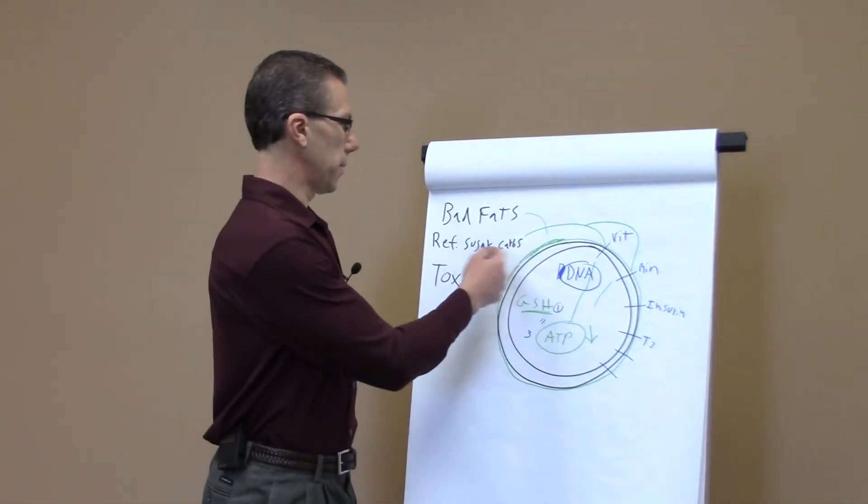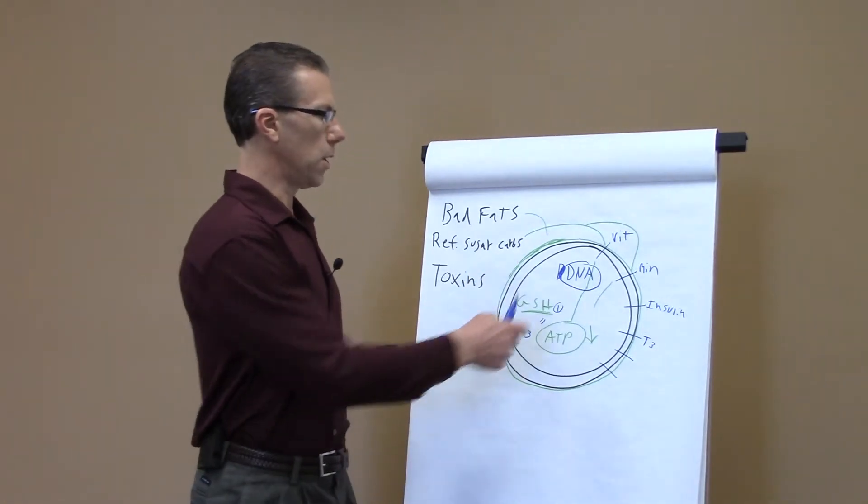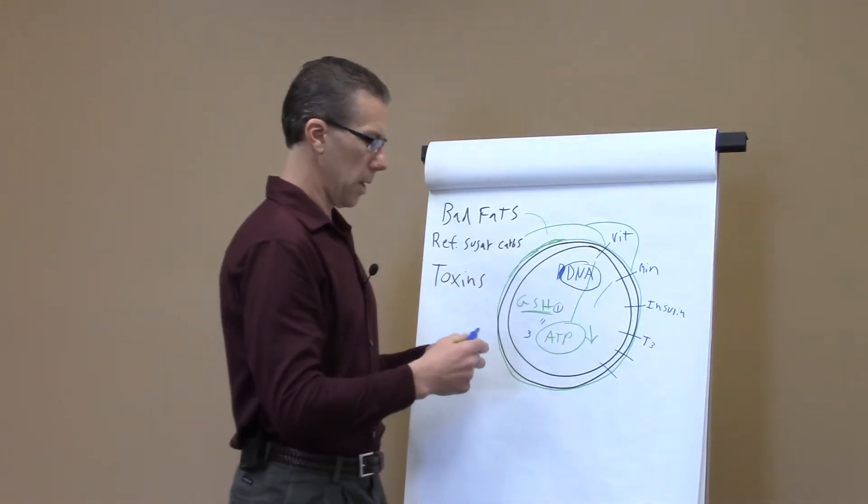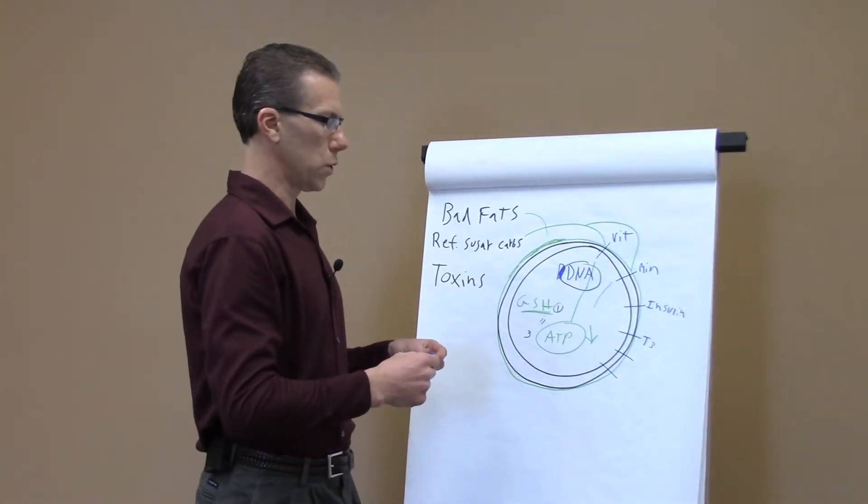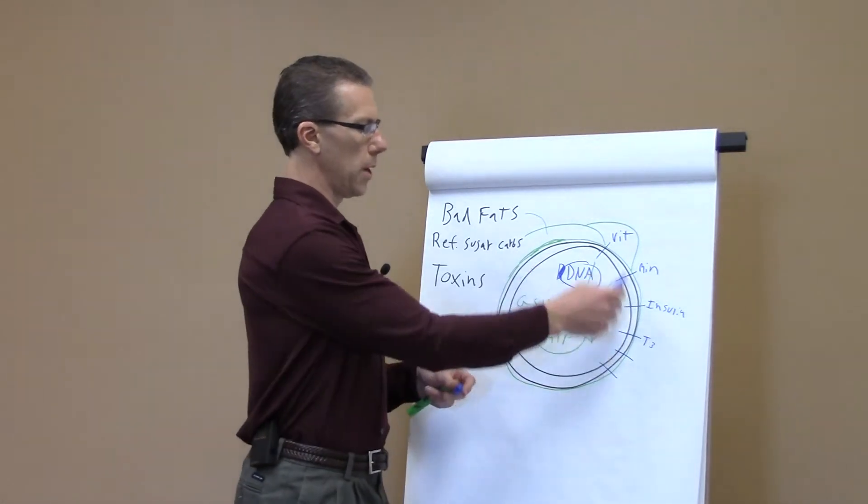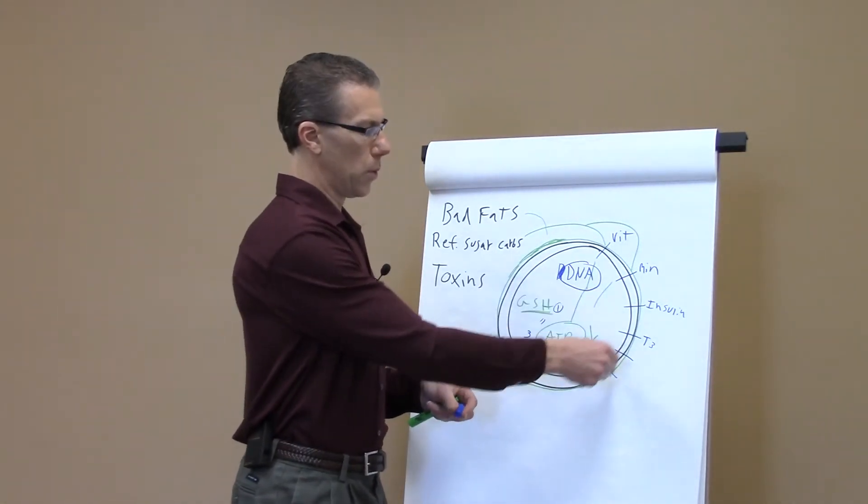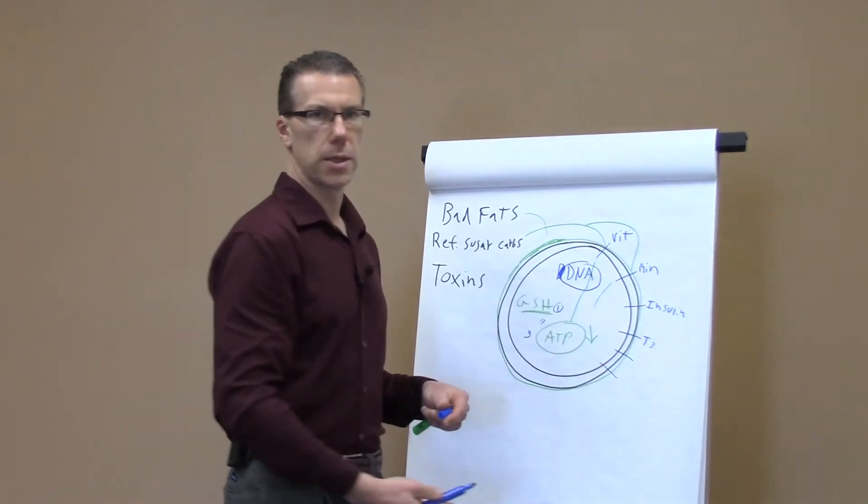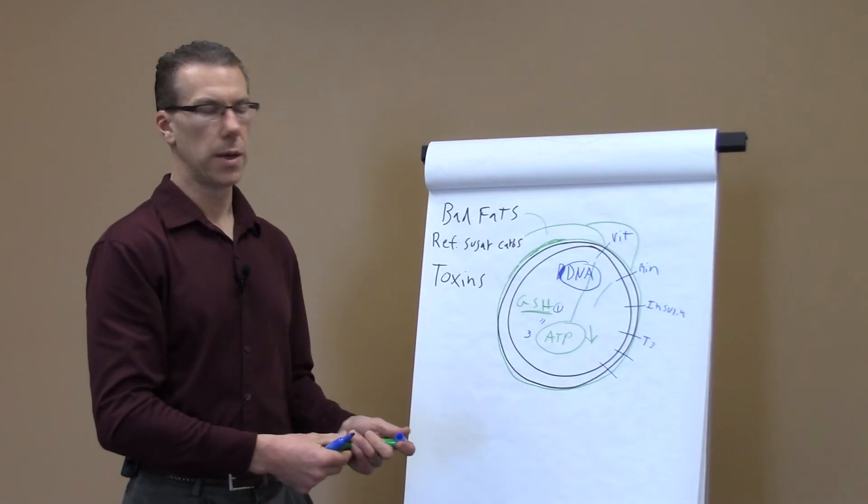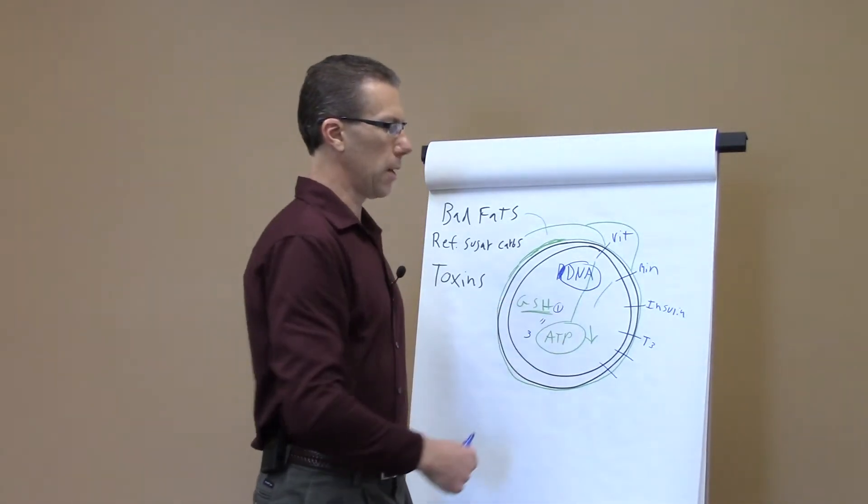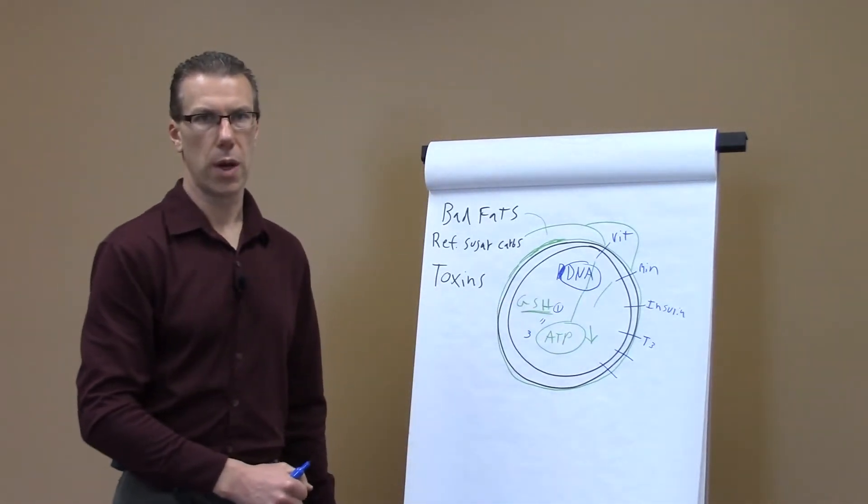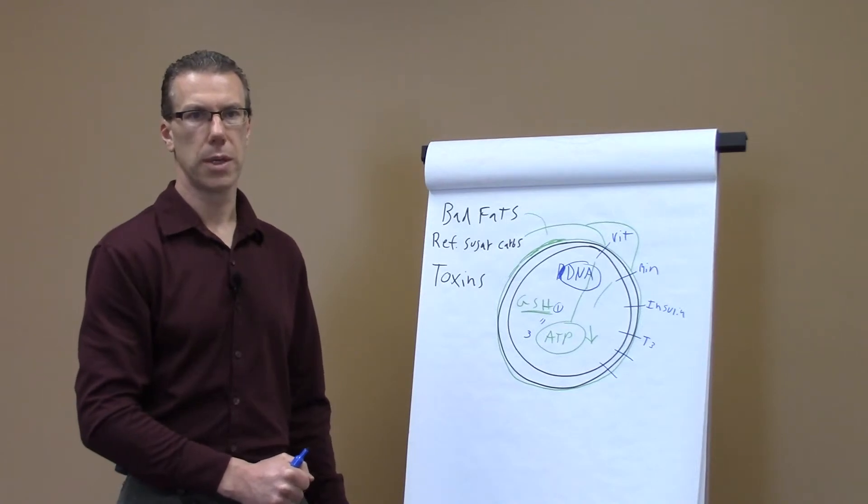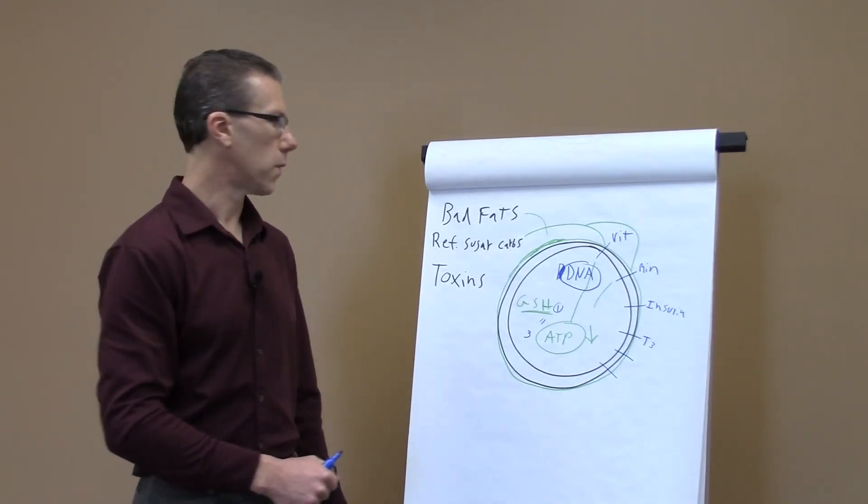These refined sugars also create more inflammation on the cell wall as well, and the more inflamed the cell wall becomes, the more blunted these receptors become, so that even the insulin doesn't get recognized as well. Then the body can't regulate the blood sugar as well, and that's how people can start to get type 2 diabetes and so forth.